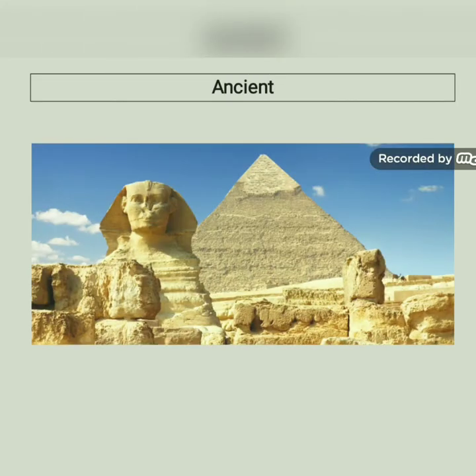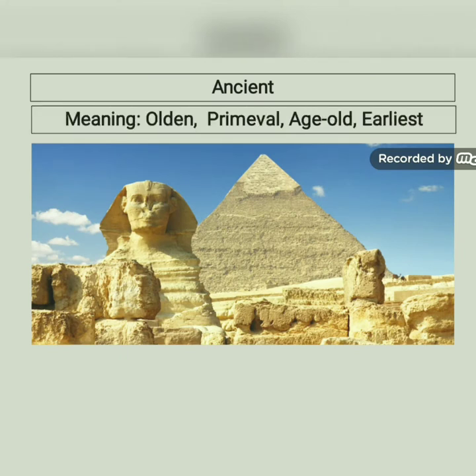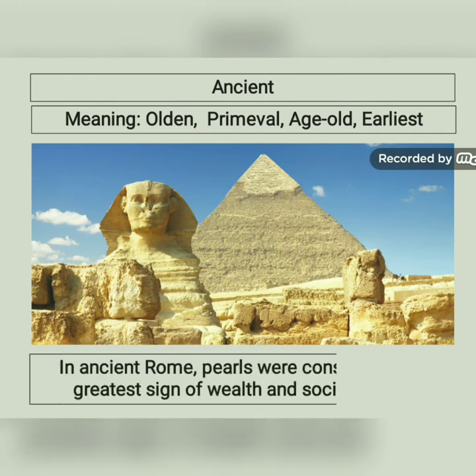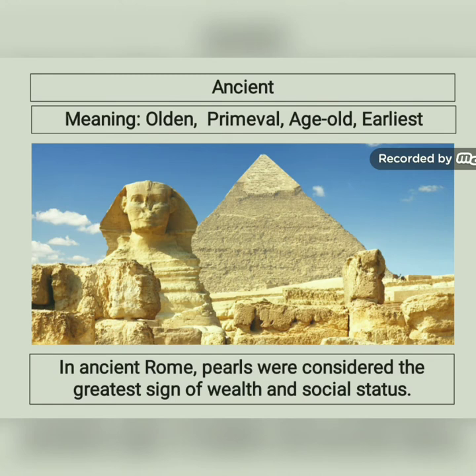The next word is ancient, which in Bangla means prachin, bhaa puraton. In English, similar words are olden, primeval, old, earliest, etc. For example: in ancient Rome, pearls were considered the greatest sign of wealth and social status.